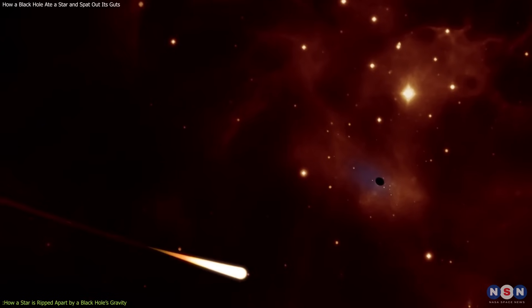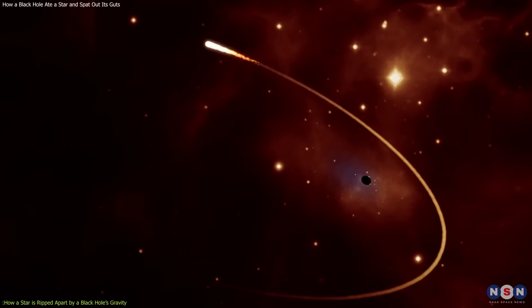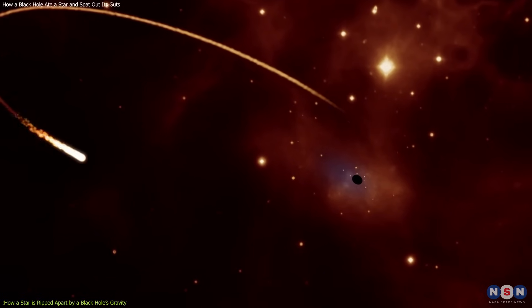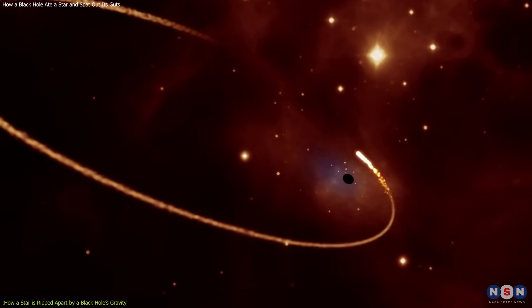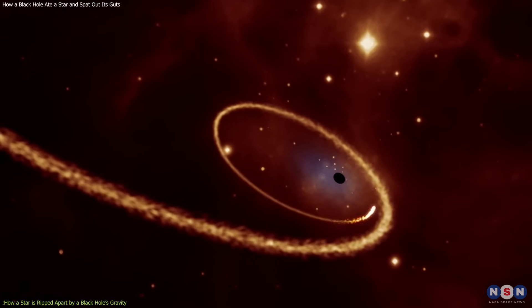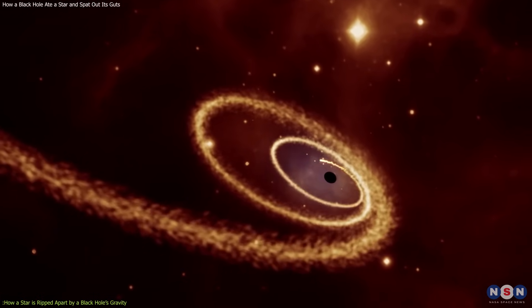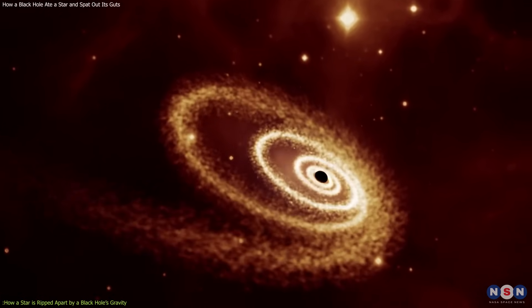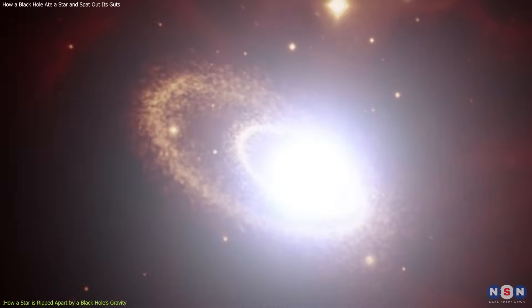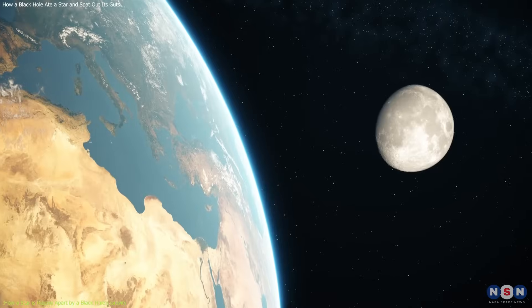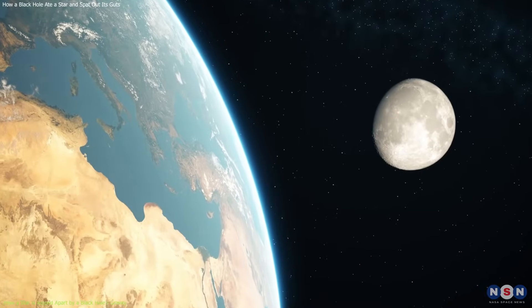Sometimes a star wanders too close to a black hole and gets caught in its gravitational pull. The star cannot escape from the black hole's grip, but it also cannot remain intact. The black hole's gravity is so strong that it stretches and squeezes the star until it breaks apart.